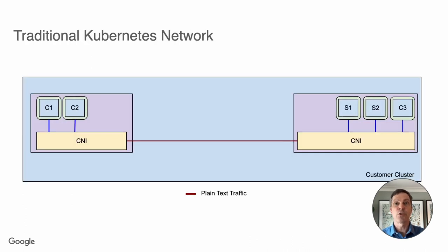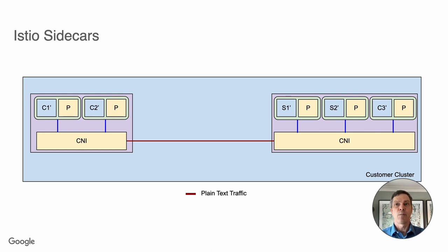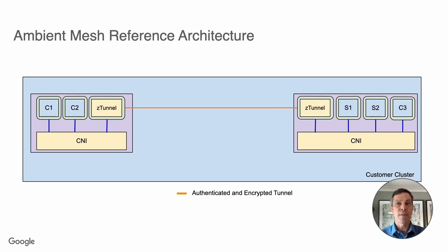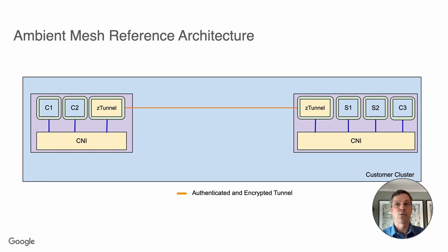Here we see a traditional Kubernetes network with a CNI and a few pods running on two nodes. With a sidecar data plane, we would need to modify the pod specification and restart the pod for each workload that participates in the mesh. With Ambient Mesh, we replace the sidecar with a node-level component that handles the zero-trust MTLS encryption, L4 policies, and observability. Workloads that wish to participate in the mesh are left unmodified and their traffic is simply redirected through this component.